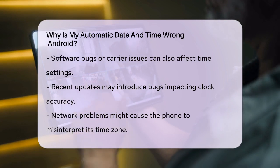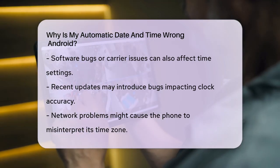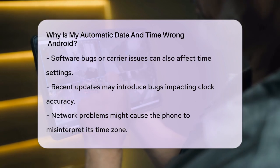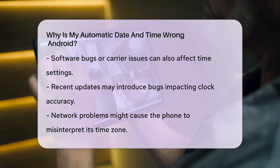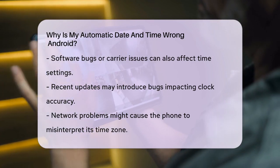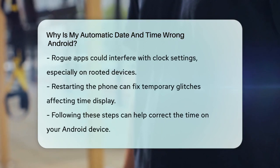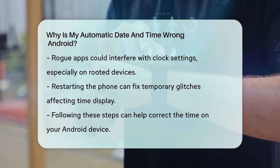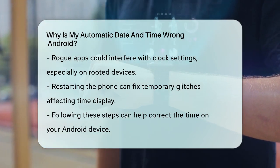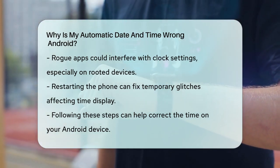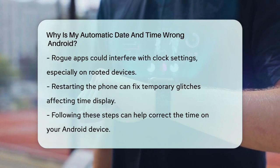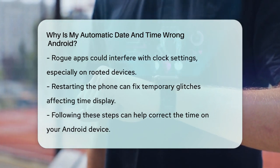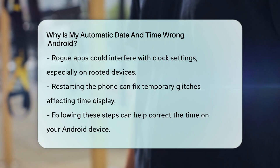Additionally, network issues with your carrier can cause your phone to think it's in a different time zone, leading to incorrect time displays. If none of these solutions work, it's worth checking if any rogue apps are interfering with your phone's clock settings. This is more likely if your phone is rooted, as some apps might have permissions to change system settings.